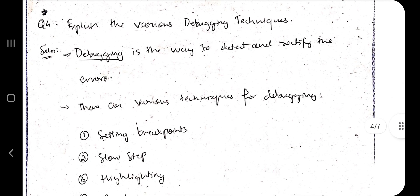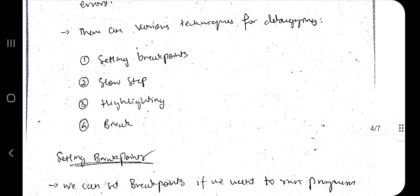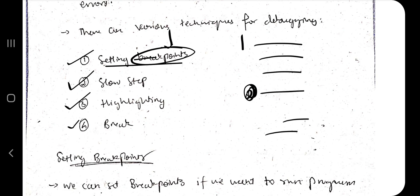Moving on, we have the next important topic which is the various debugging techniques. What is debugging? It means finding out the error, that's all. There are various techniques for it: setting breakpoints, slow step, highlighting, and break. What is breakpoint? Breakpoint means at this point when it's getting executed, if you have added this point, it should break at this point. When you have set a breakpoint, it will stop at that point and come out of the execution and it will pause for a moment.